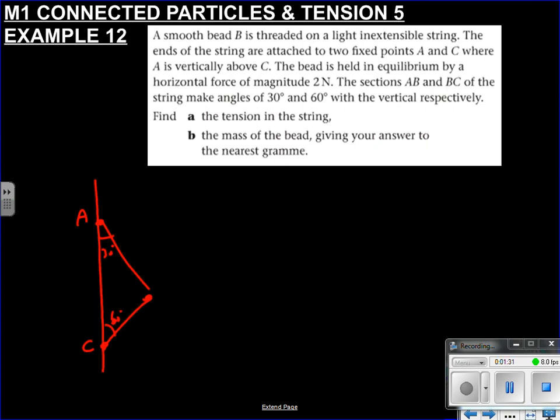So 30 degrees and 60 degrees, and this is the mass B here. Do we know the mass? Nope. So we'll just call that MG. And it's being held in tension by a force of 2 Newtons. There's going to be tension there, there's going to be tension there. It's going to be the same because it's in equilibrium and it's a smooth bead. Don't care about any forces on the wall, all we care about is the forces on the particle.